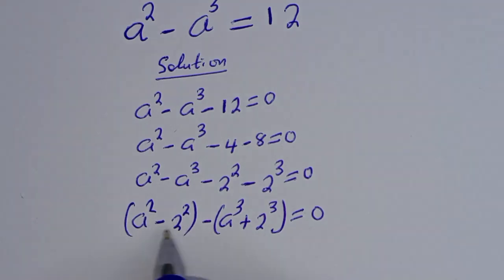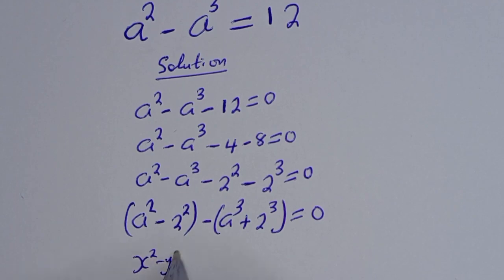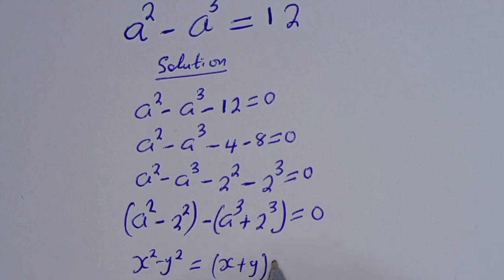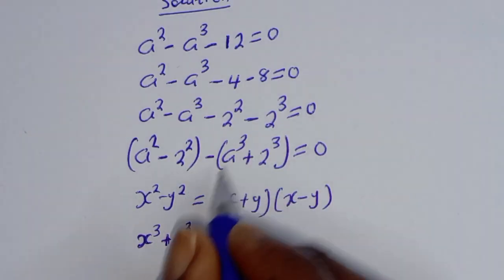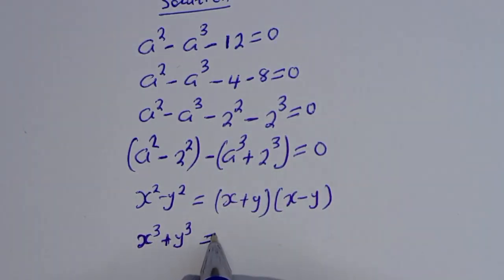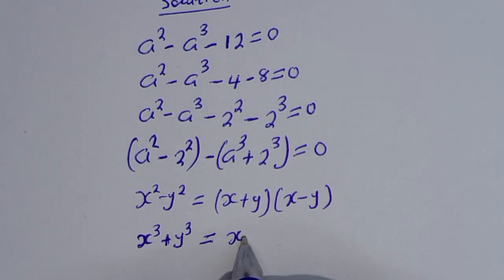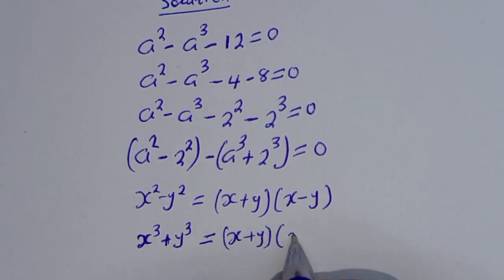Now, a squared minus 2 squared is a form of difference of squares. Recall: x squared minus y squared equals (x + y)(x - y). And x cubed plus y cubed equals (x + y)(x squared minus xy plus y squared).